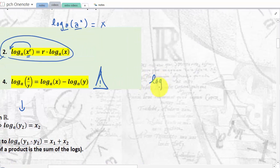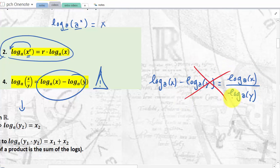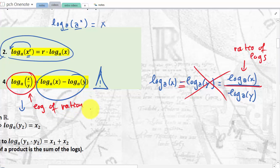Be careful with a very common student mistake. Students see log base a of x minus log base a of y and write it as log base a of x divided by log base a of y. This is really not true. A sum is not equal to a ratio. The difference of logs equals the log of a ratio — not the ratio of logs. 'Log of a ratio' and 'ratio of logs' are completely different things.